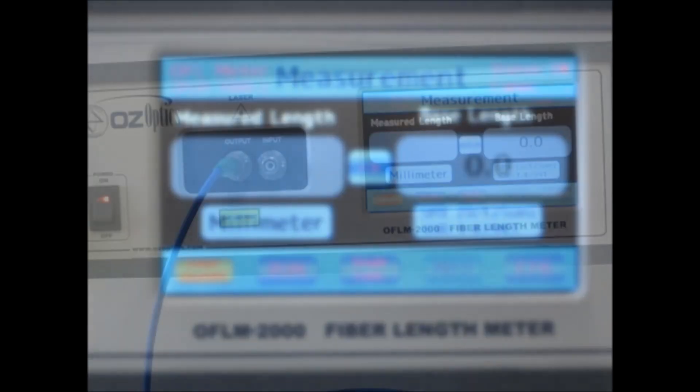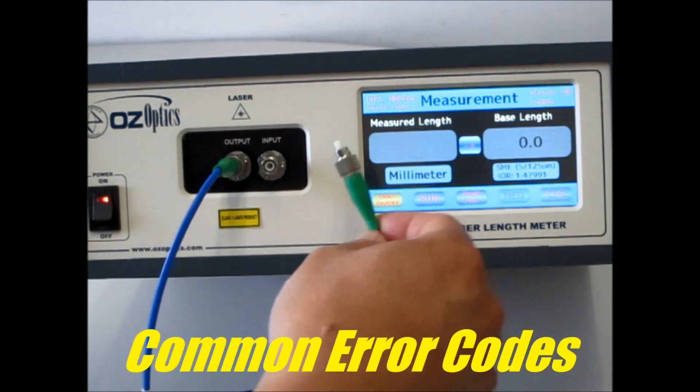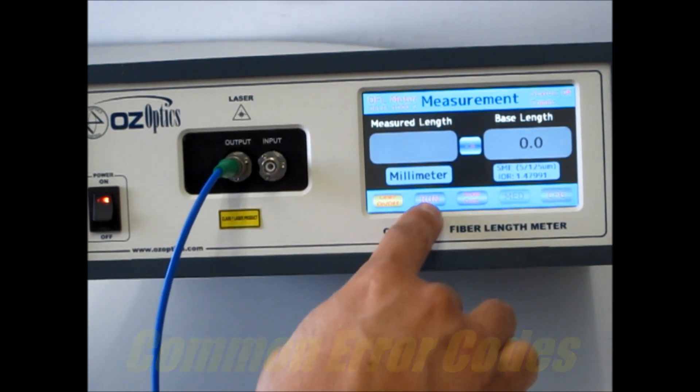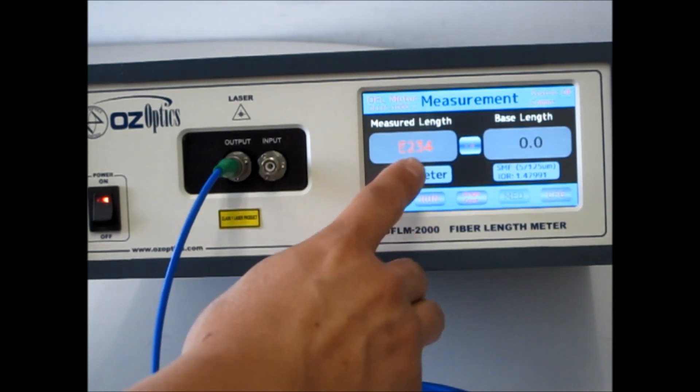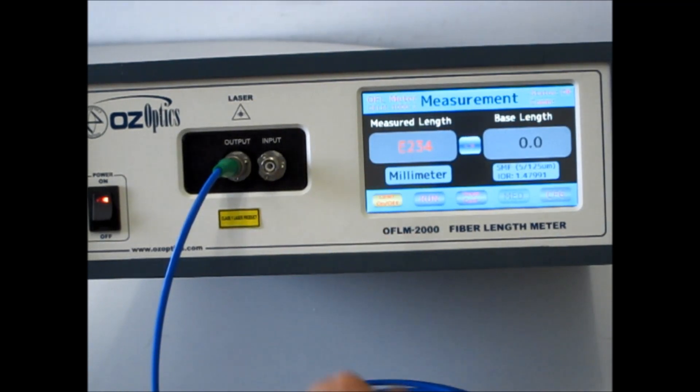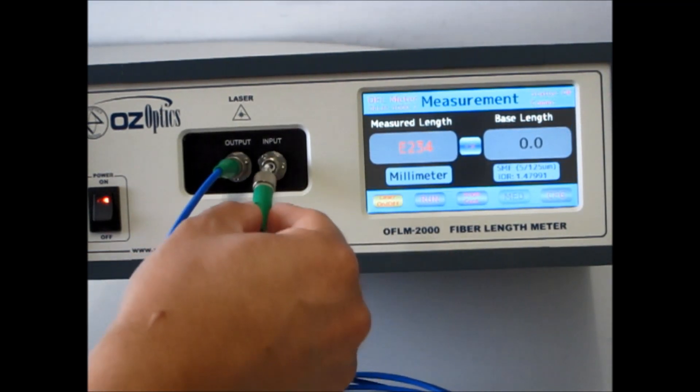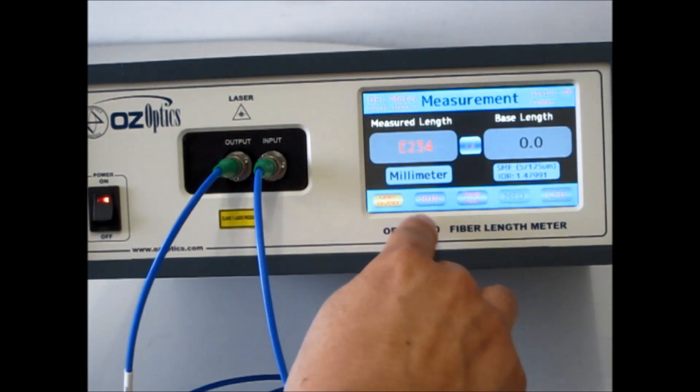There are always things that can go wrong, and the fiber length meter will let you know via error codes. By far the most common is that there's not enough light or there's no light entering the receive port. I've intentionally left this patch cord unplugged, and when I push the run button, the error code E234 comes up. To fix this, make sure both ends are plugged in. And when you push the run button, the error code clears.